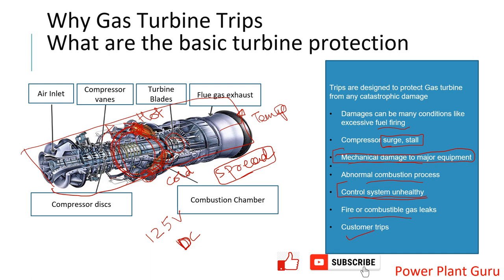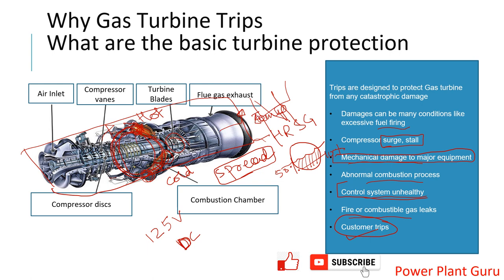The last one is the customer trip, where many people get confused. For example, if you are connected to an HRSG that has a steam drum where you need to maintain a 50% water level, and due to some reason the water level drops down to the HRSG trip level — say 10% — and you are not able to cut off the GT damper position to the HRSG, it will send a stop signal to the GT to protect the HRSG equipment from further high-temperature water starvation damage. That is one example of a customer trip.